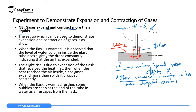Why did the water rise slightly? When you heat the round-bottomed flask you are heating the glass first. The glass, which is in solid state, will expand before the air inside gets the heat. When the flask expands it creates a larger space, so water will come in to fill that space — that's why the water rose slightly. Then after some time the heat reaches the air, which is a gas.